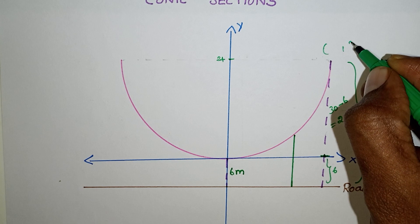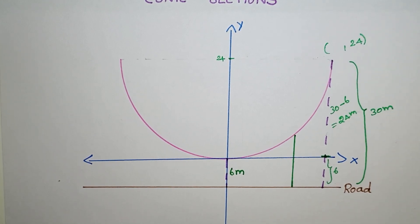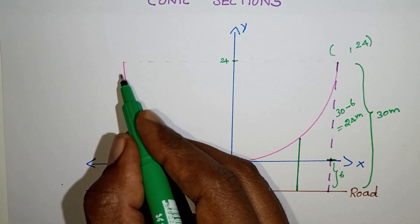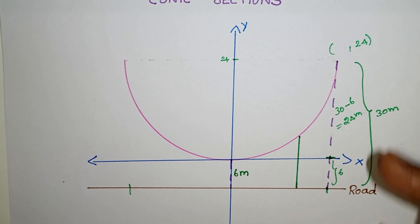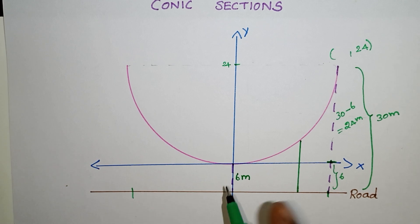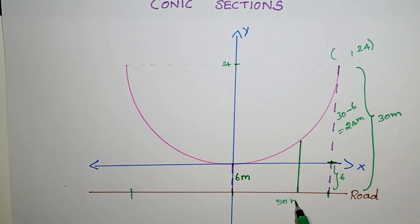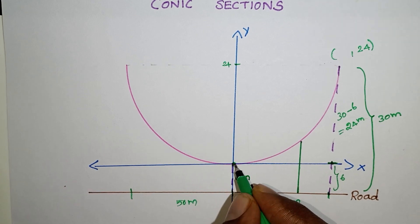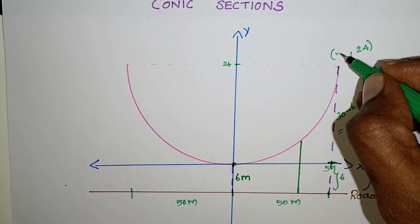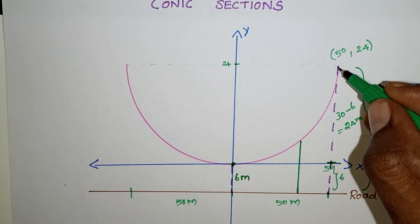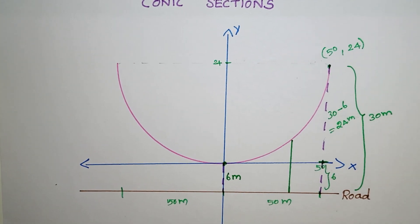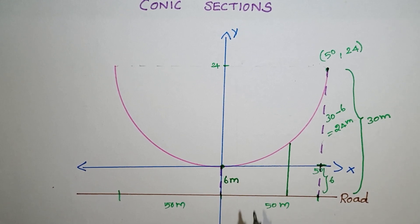If we set up the x-axis, the road is 100m long. The second point of view is 50m from each end. The center is at 50m, so the point on the parabola at the end is (50, 24).